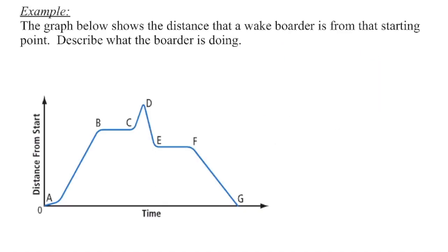This particular graph represents a wakeboarder. Over the course of time, we can see his distance from where he starts. So time is passing, and this is the distance from the starting point. I want you to create a scenario, come up with a story. What's happening as the wakeboarder goes through time? Can you use the key pieces on the graph to describe what may be going on?